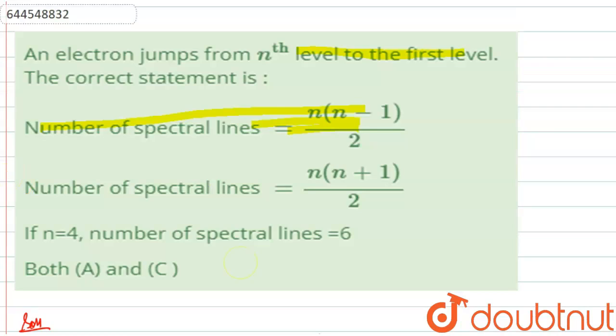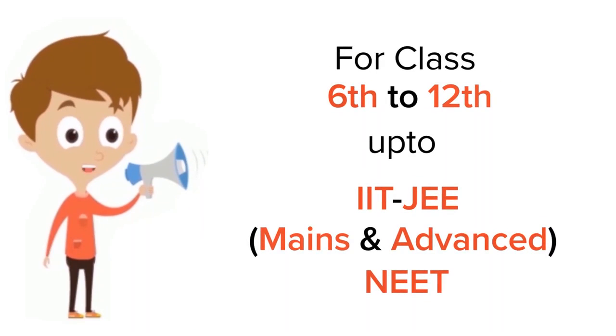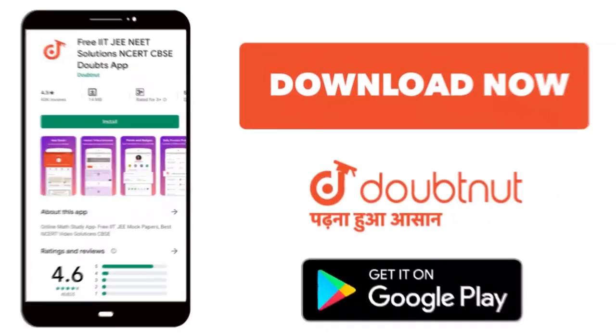So option 3 is also correct. Therefore, option 4, which is both A and C are correct, this is the correct option. For class 6 to 12th, IIT-JEE and NEET level, trusted by more than 5 crore students, download Doubtnut app today.